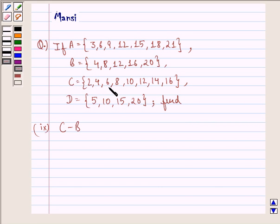C equals the set {2, 4, 6, 8, 10, 12, 14, 16}, and D equals the set {5, 10, 15, 20},